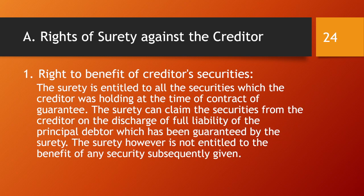The primary right of any surety is against the creditor, because the creditor is the one who receives money from the surety. The first right is the right to benefit of creditor's securities. Whatever security has been given to the creditor will go to the surety once the surety has released payment. The surety is entitled to all securities held by the creditor at the time of the contract of guarantee, but is not entitled to any security subsequently given after the guarantee.